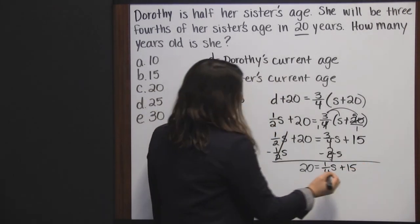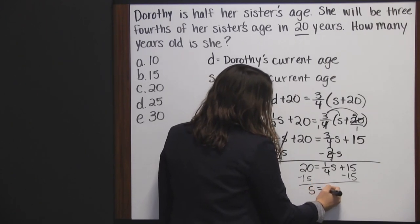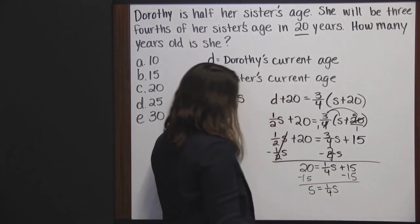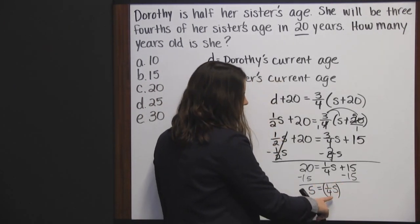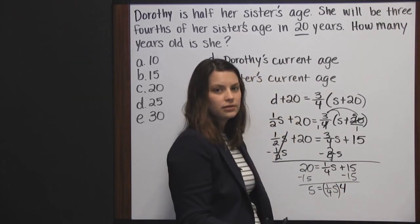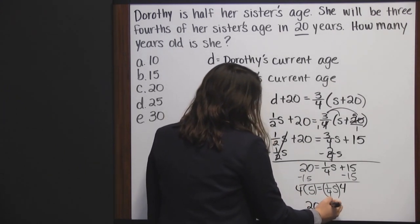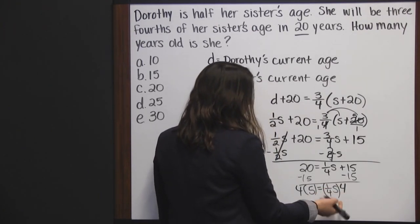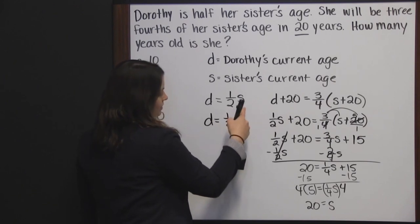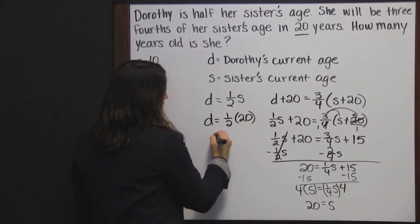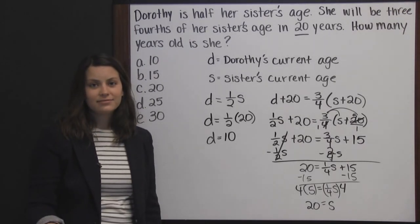Next, I need to subtract fifteen from both sides. Twenty minus fifteen is five, and five is a fourth of the sister's age. Finally, I need to multiply both sides by the multiplicative inverse of a fourth, which is four. Four times five is twenty, and twenty is her sister's age. We're left with S. Remember that Dorothy is half of her sister's age. Since we now know her sister's age is twenty, Dorothy is half of that — half of twenty is ten. So Dorothy is ten years old.